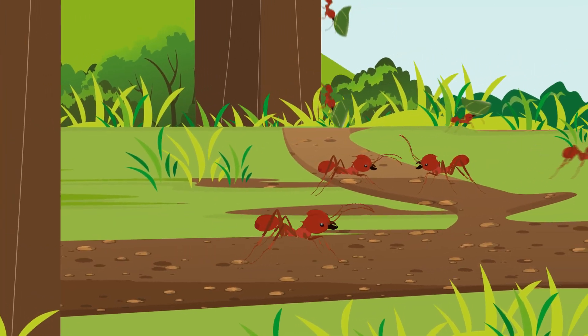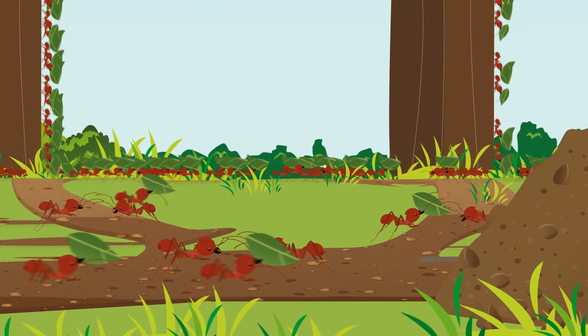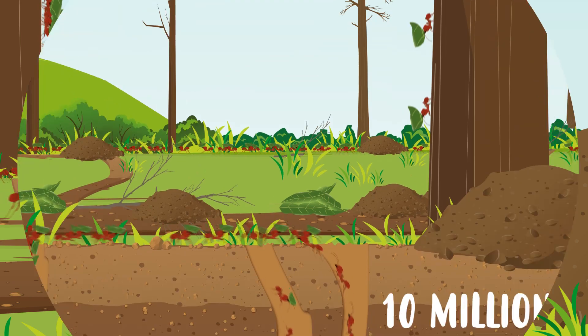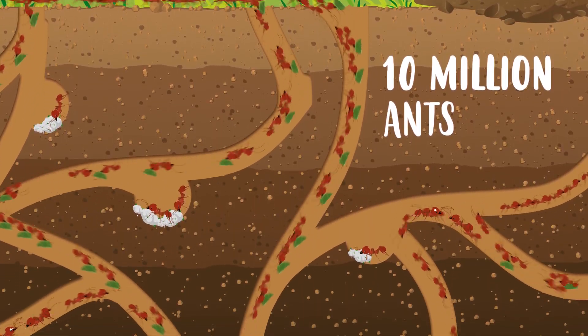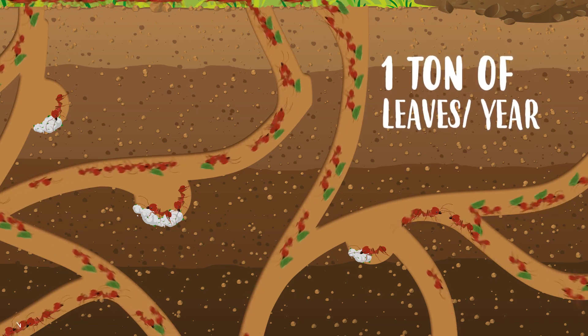They work non-stop and at any sign of danger they communicate quickly to protect the nest. A single nest may contain 10 million ants. Together, they can consume a ton of leaves per year.